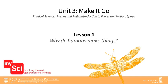Welcome to Lesson 1 of Unit 3: Make It Go. In this lesson, students will work to answer the question: Why do humans make things? Students will consider where multiple common objects come from and the reason engineers make things. They figure out that some objects are natural and others are engineered, and they learn that engineers create objects to solve problems.